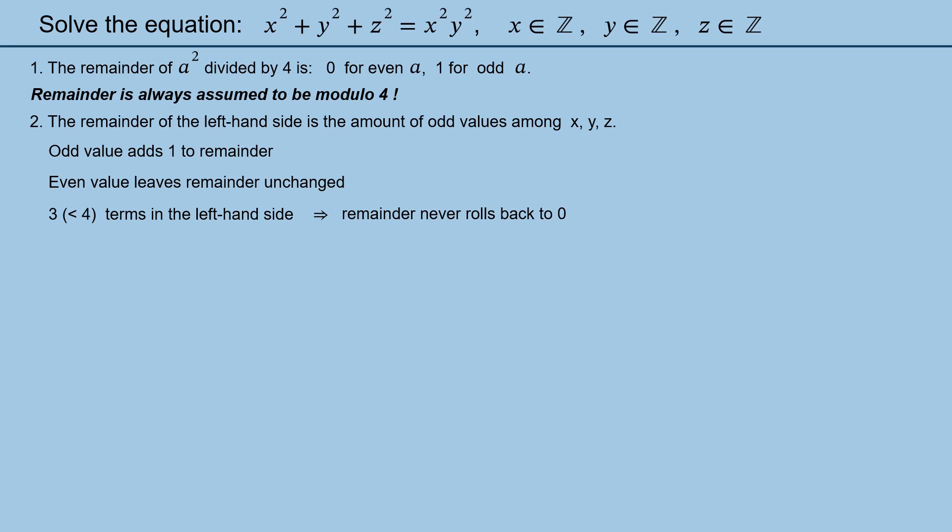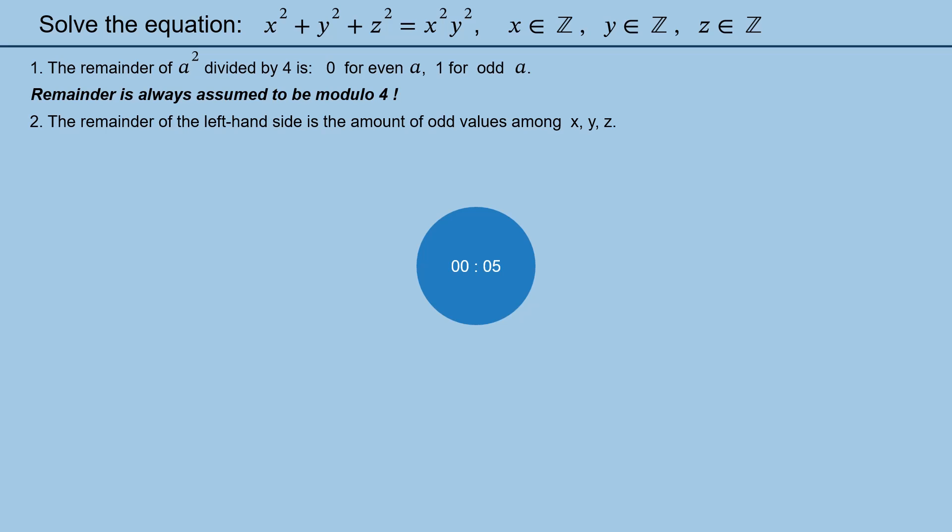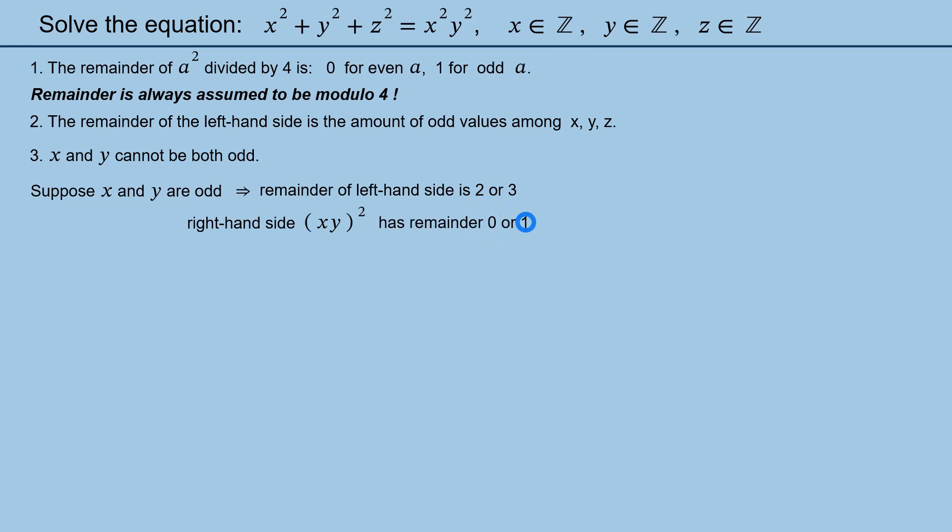Now the statement 2 is also proven and you have another chance to continue on your own. Statement 3: x and y cannot be both odd. Which of course is proven by contradiction. Suppose x and y are both odd, while z can be either even or odd. This means that we have at least two odd terms in the left-hand side. Therefore according to statement 2 the remainder of the left-hand side is either 2 or 3 depending on evenness of z. At the same time the right-hand side which can be written as square of the product x times y is a full square. And according to statement 1 may have remainder 0 or 1. We see that left and right-hand sides have no common remainder values. This contradiction proves statement 3.